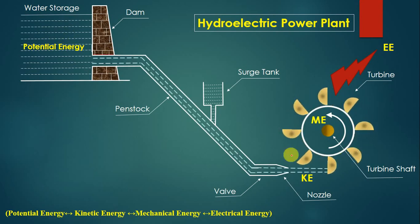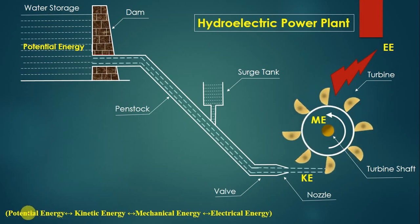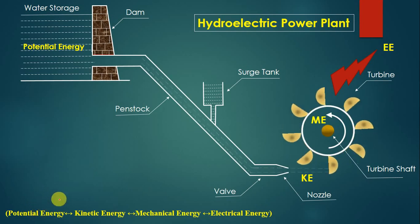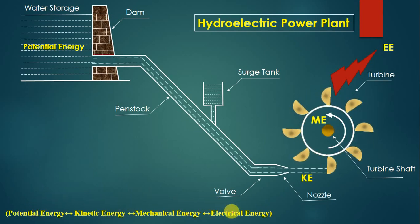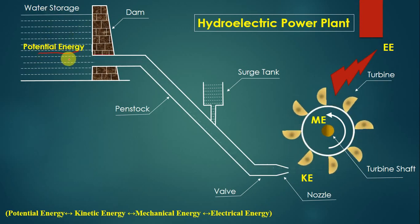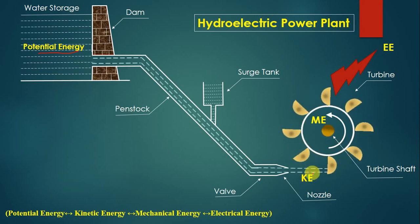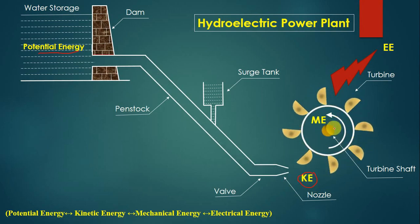Water coming from the dam ultimately gives us mechanical energy as output at the shaft. There are several energy conversions: potential energy converts into kinetic energy, then kinetic energy into mechanical energy, and mechanical energy into electrical energy. Potential energy converts to kinetic energy inside the pipeline and nozzle. The dam is at a higher height, so the water has high potential energy. As the water flows out, it has a high velocity jet, meaning high kinetic energy.